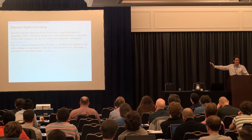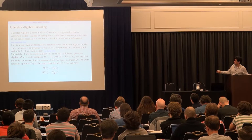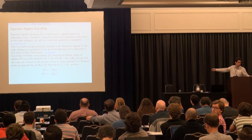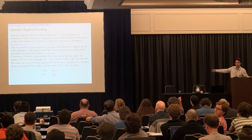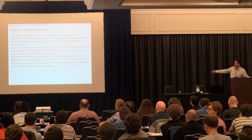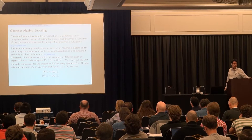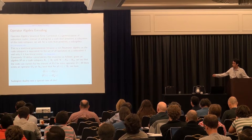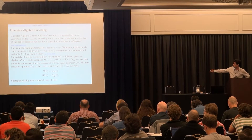Let me define correctability concretely — I'll always talk about erasures. Given an algebra M on the code subspace living inside a larger Hilbert space that tensor-factorizes, I say the code can correct for the erasure of A-bar if every operator in the algebra can be represented as an operator just on A acting on all code words, and this must hold for the operator and its Hermitian conjugate.